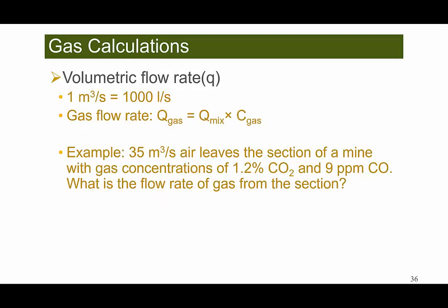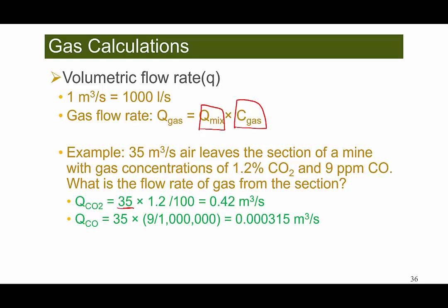The second concept is volumetric flow rate: one cubic meter per second equals 1000 liters per second. The gas flow rate equals the volumetric flow rate of the gas mixture multiplied by the concentration of a certain gas. For example, 35 cubic meters per second of air leaves a section of a mine with a gas concentration of 1.2% CO2 and 9 ppm CO. The flow rate of CO2 equals 35 × 1.2% = 0.42 cubic meters per second. For carbon monoxide, 35 × (9 ÷ 1,000,000) = 0.000315 cubic meters per second.